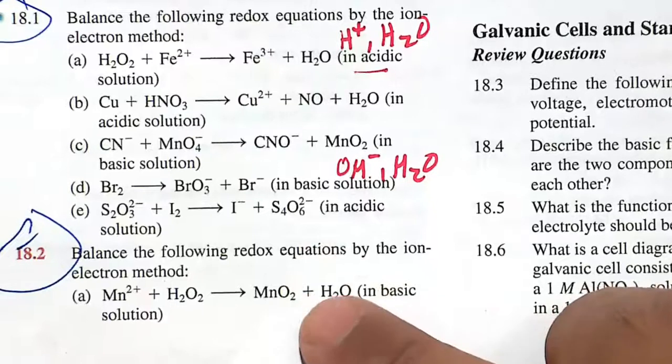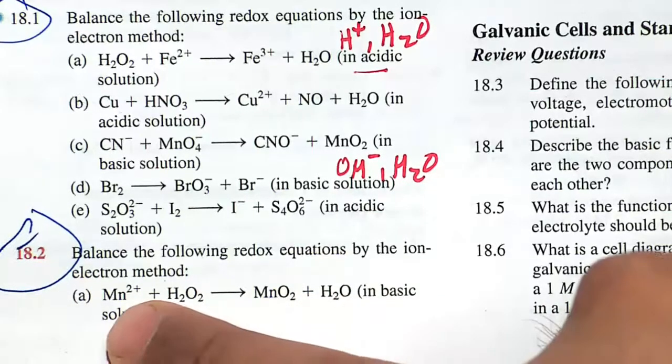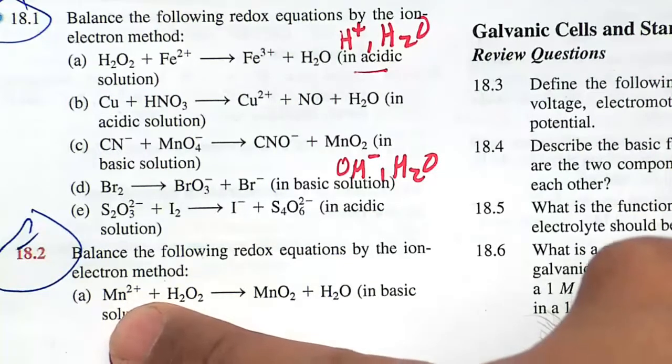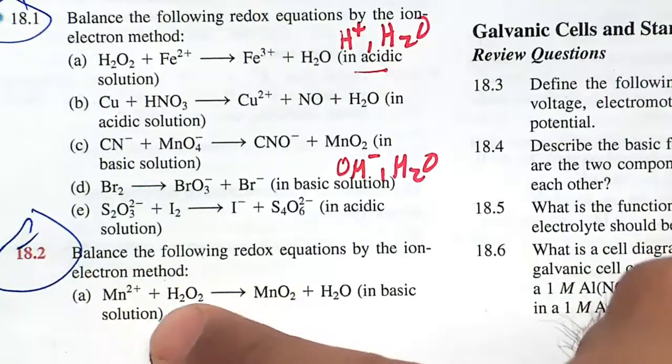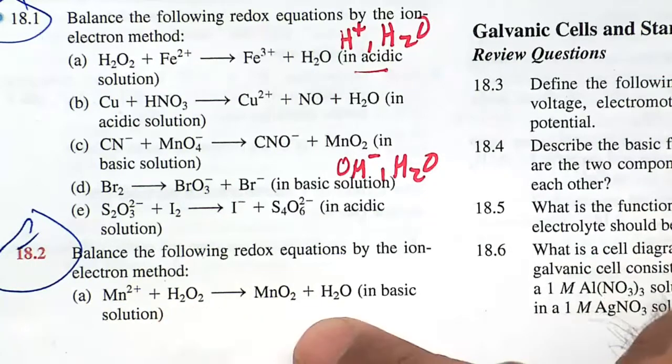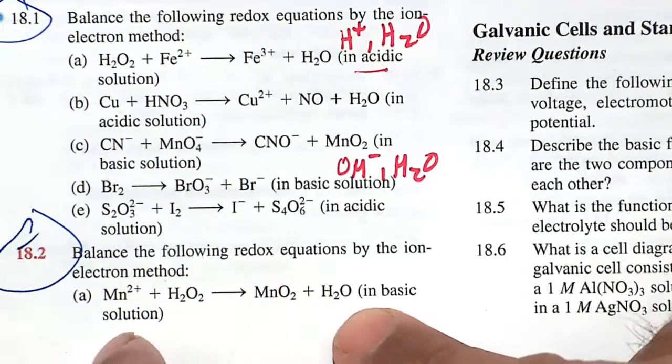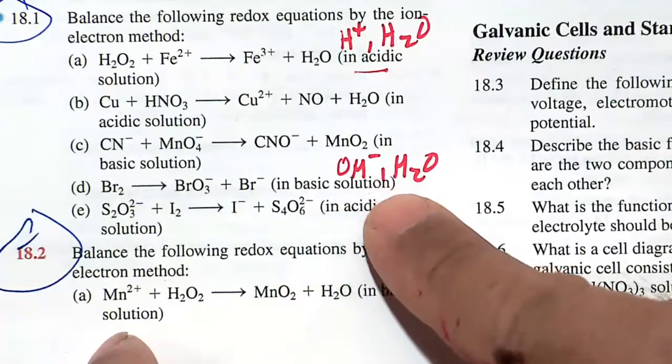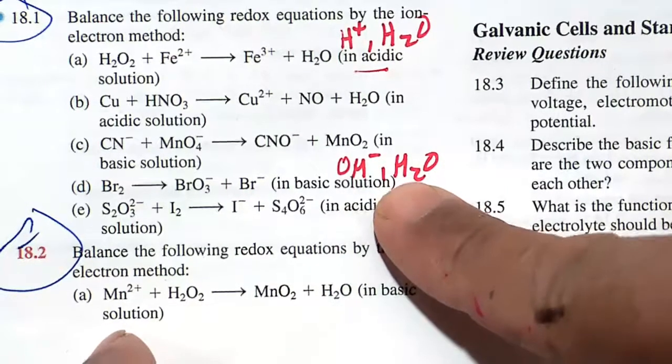In this video, we'll balance redox reactions. Our first problem here in 18.2 part A is Mn+2 going to MnO2, hydrogen peroxide H2O2 going to H2O water. And this is happening in basic solution. So in basic solution, we have a lot of OH- around, and then we also have a lot of H2O around.